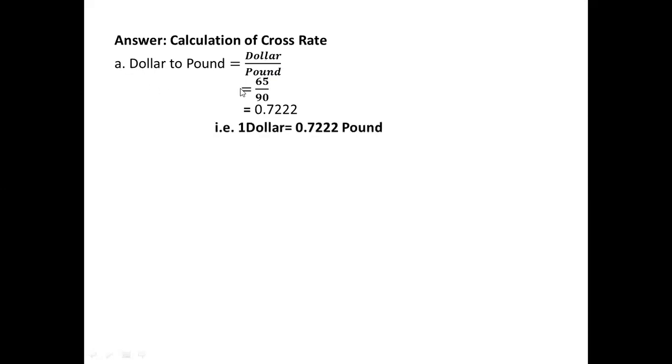(a) Dollar to Pound — we have to find out. The formula will become: Dollar divided by Pound. The Dollar is 65 Rupees and Pound is 90 Rupees. When simplified, the answer is 0.7222. That means one Dollar equals to 0.7222 Pound.